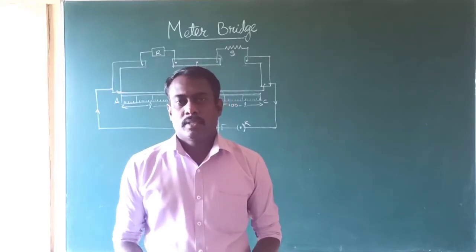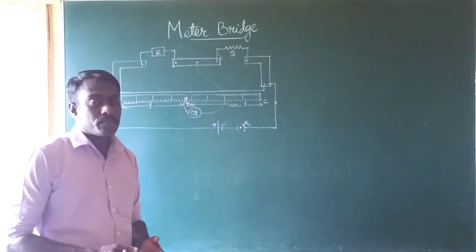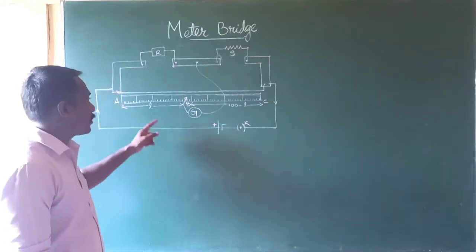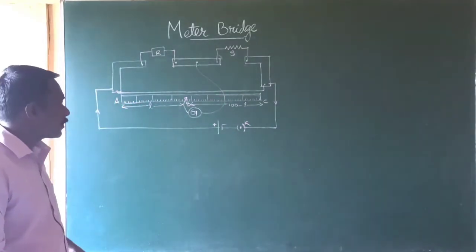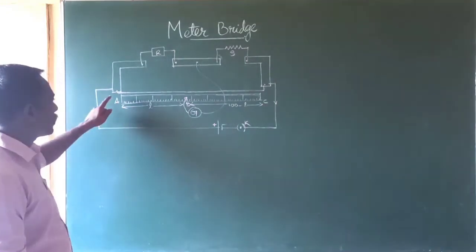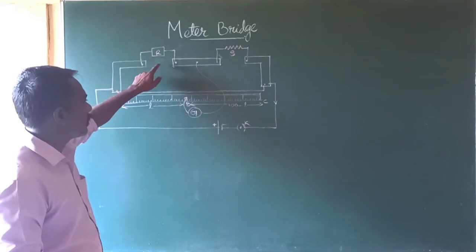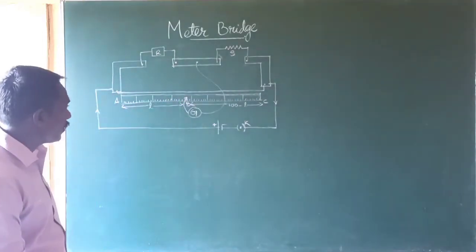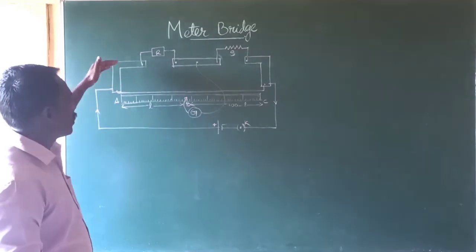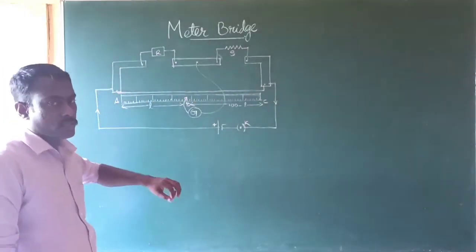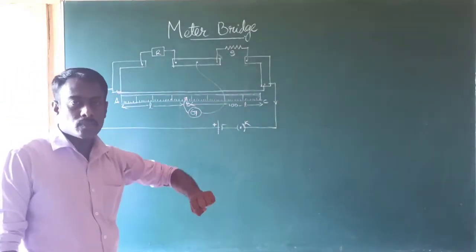Now we are going to learn about another device that works exactly on the principle of the Wheatstone bridge. A slide wire bridge, also called a meter bridge, is a practical form of the Wheatstone bridge. A meter bridge is made up of thick copper strips with two gaps in between them. The thickness of the metal strips is to maintain low resistance so that the voltage drop across the gaps between the strips becomes very low.